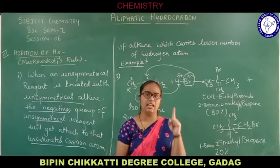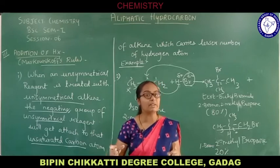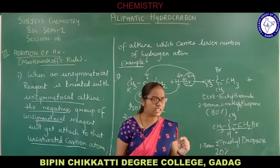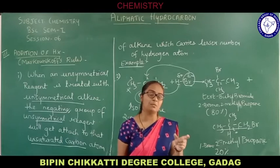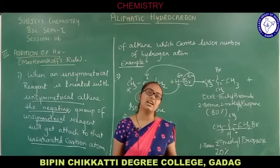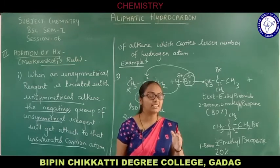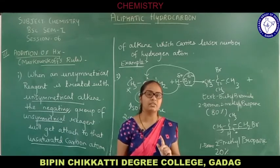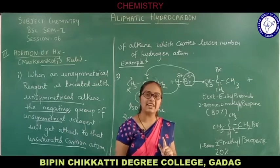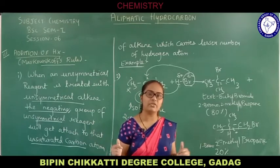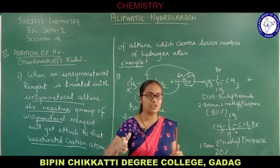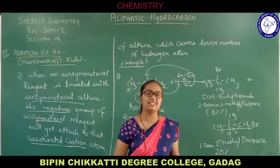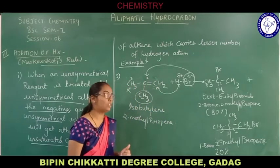Remember: whenever any unsymmetrical reagent is added to any unsymmetrical alkene — unsymmetrical is very, very important — the negative part, meaning the halo group of the reagent, will go and get attached to the unsaturated carbon atom which is carrying a lesser number of hydrogen atoms. Whereas the hydrogen left will go and get attached to the carbon which has more hydrogen atoms. So rich become richer in terms of hydrogen.